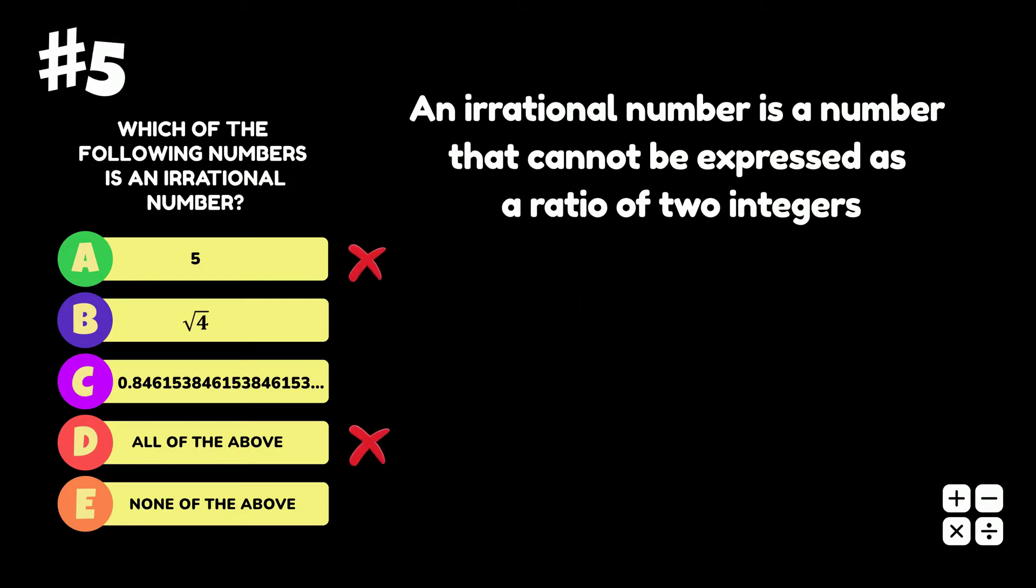The square root of 4 is equal to 2, and 2 can also be expressed as a ratio of two integers, as these examples show. Therefore, the square root of 4 is also not an irrational number. This leaves us with options C and E.